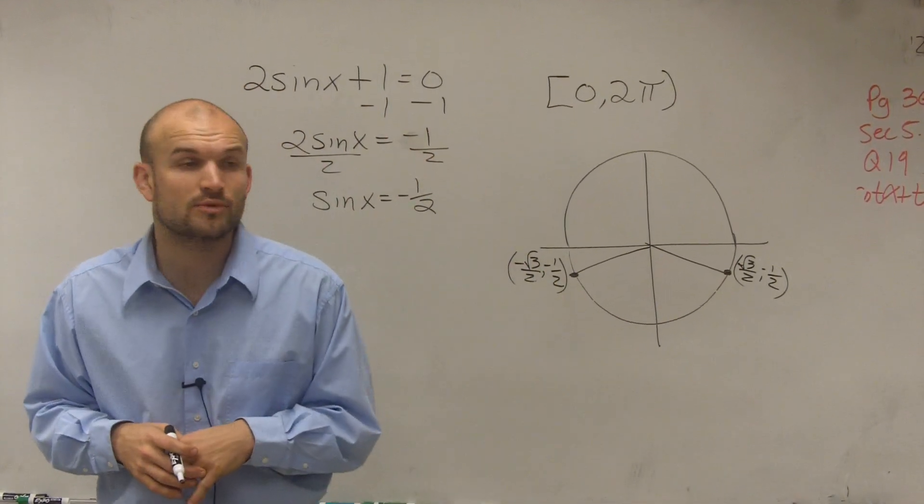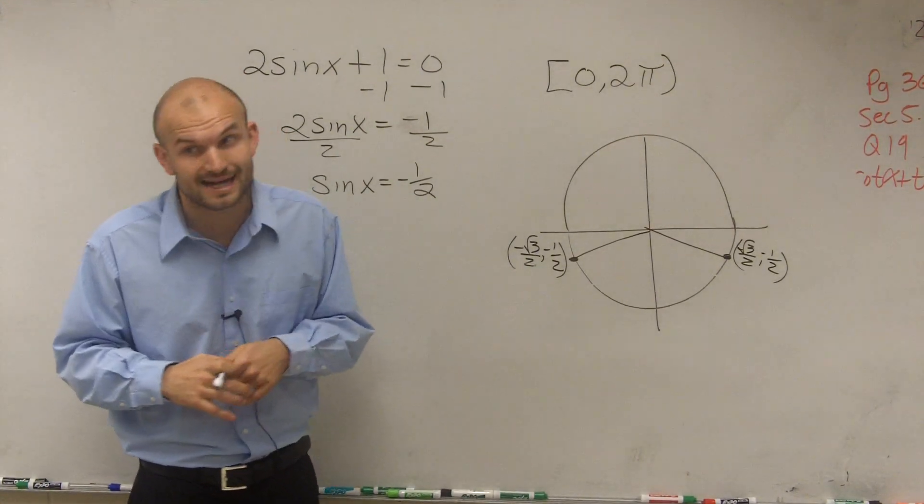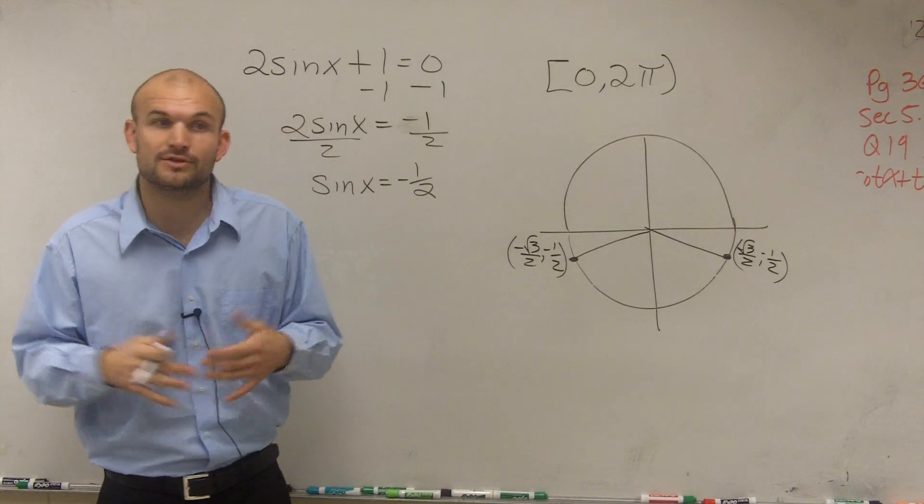So those are your two points on your unit circle, which we need to determine what exactly are those points. Well, we've been using the unit circle a lot to really remember where those two points are.